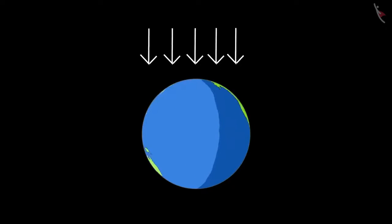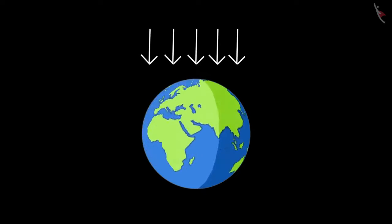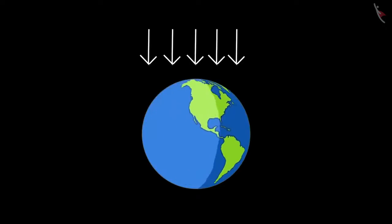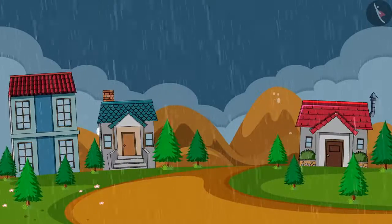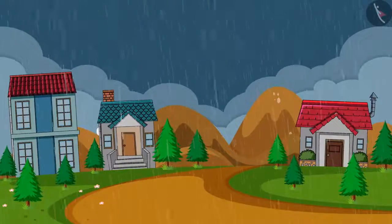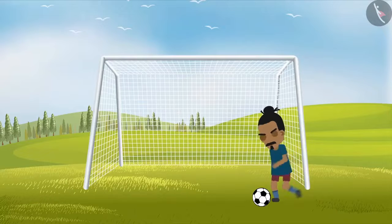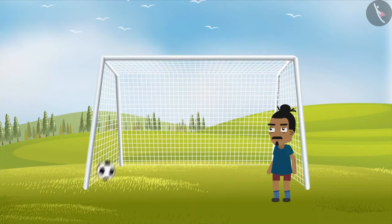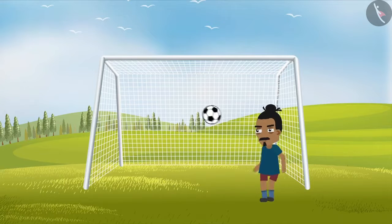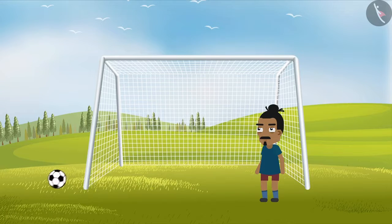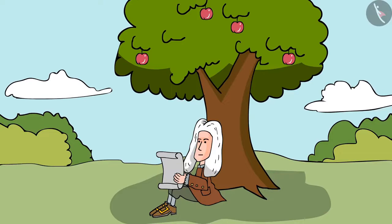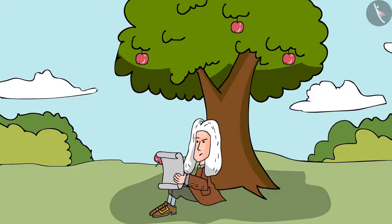Here are a few examples of objects attracted towards the earth. Rain always falls towards the earth. We observe that as soon as a football rises above the field, it falls back on earth. An apple detaching from the branch of a tree falls to the ground.